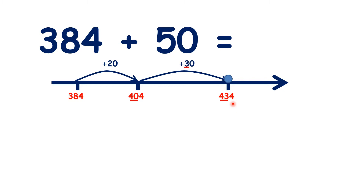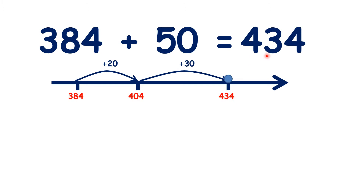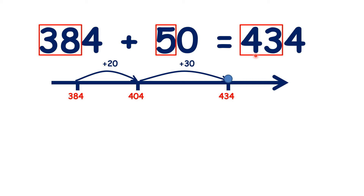So because we're adding tens, the units' digit stays the same. We have added 50 because we added 20, then added 30, and that helped us find our answer, 434. So we started with 300s and 8 tens, which we can think of as being 38 tens. We added 5 tens, and then in our answer we ended up with 400s and 3 tens, which we can think of as being 43 tens.